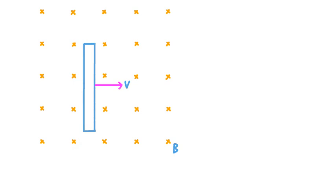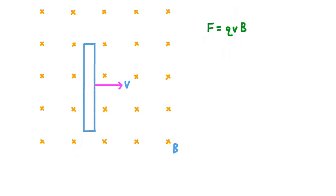It may seem like this wouldn't cause anything to happen, but actually this movement through the magnetic field creates a force that acts on the charges in the conductor. When we have an electric charge Q moving with a speed V perpendicular to a magnetic field B, that charge will experience a force due to this movement. Thinking about our conductor, if we assume it is electrically neutral, that means it has the same number of positive charges as negative charges. But because it is a conductor, some of those negative charges — some of the electrons — are fairly mobile and easily able to move throughout the conductor. As our conductor moves along through this field, these electrons will experience a magnetic force.